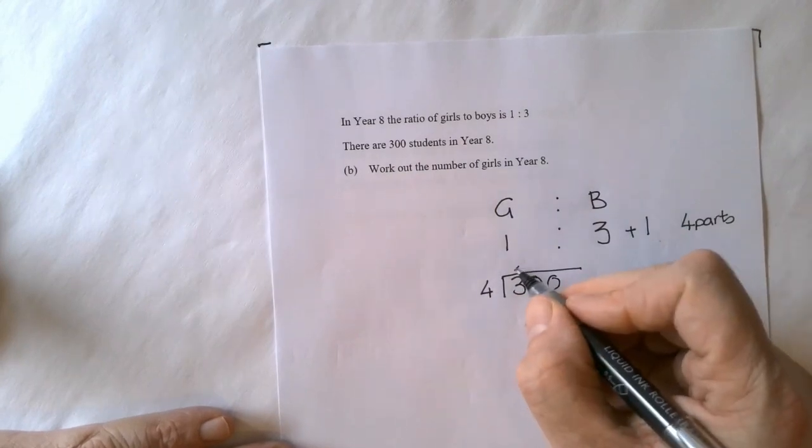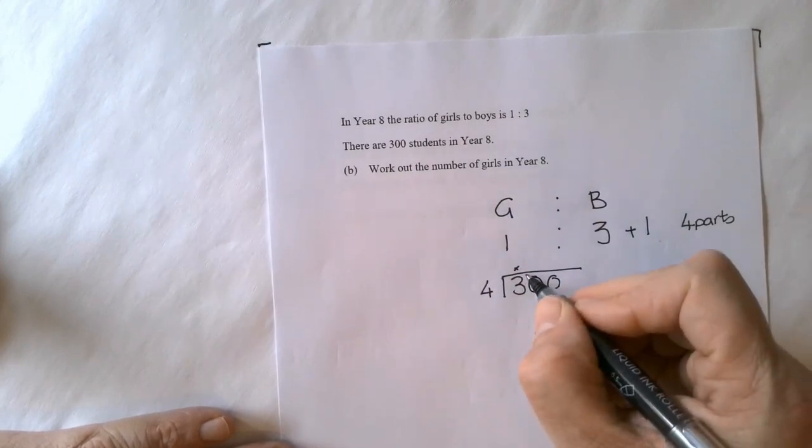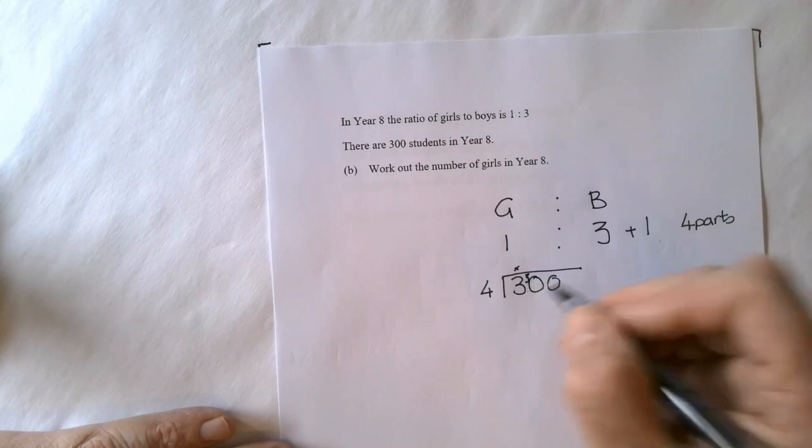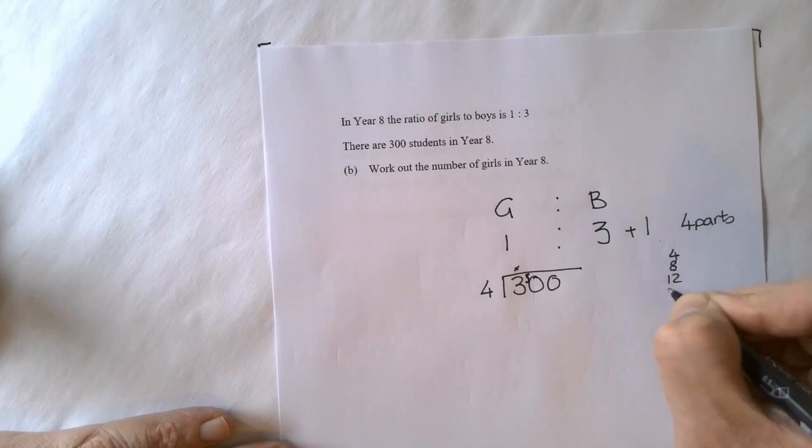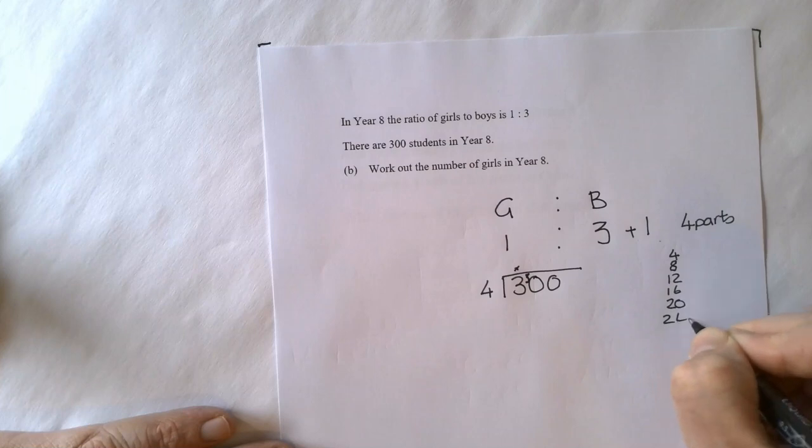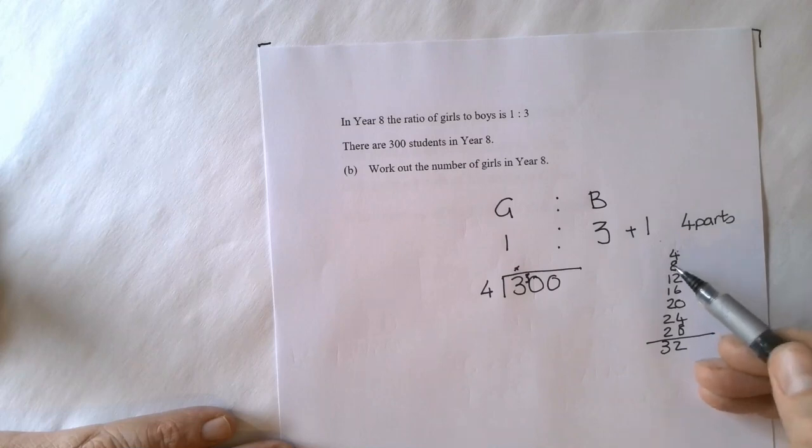4s go into 3? No, put a little cross, put your 3 there. 4s into 30. You can just list your 4 times table to do this if you want. 4, 8, 12, 16, 20, 24, 28, 32. So we know at this point we've gone past it. So how many 4s? 1, 2, 3, 4, 5, 6, 7.